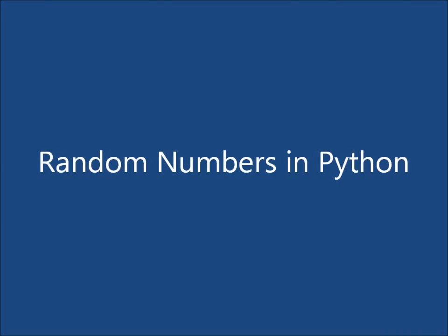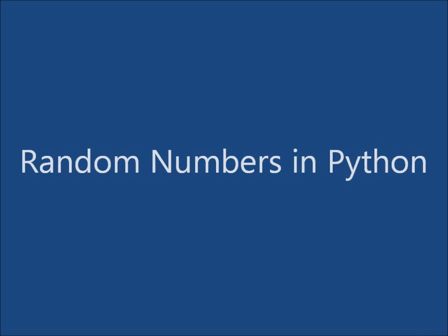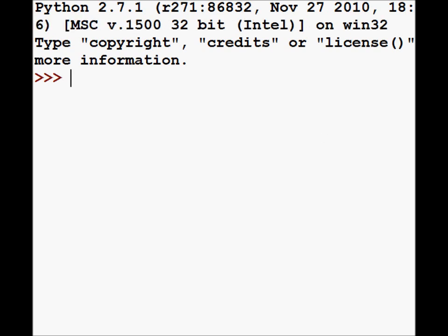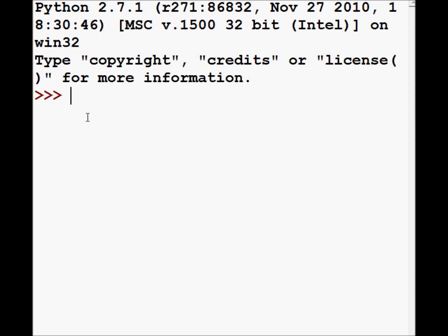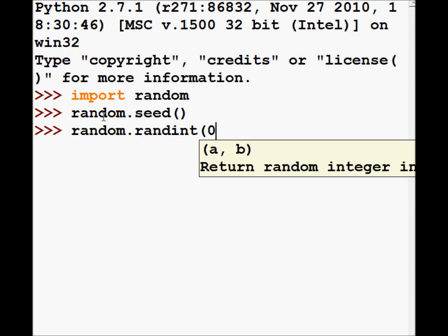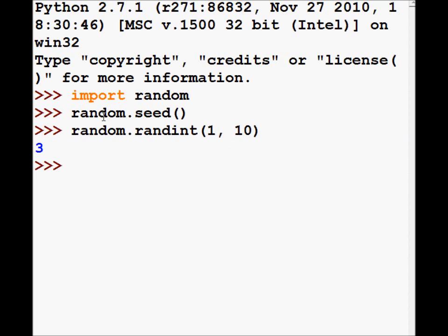Now, you will need to do random number generation in Python, so here is how you do it. You can import a random module, seed it, so there is a function that seeds the random number generator with the current system time. And then one of the useful methods in that module is randint that returns an integer in the interval a, b, so let's say 1 and 10, so here is a random 3, randint 1 10, so the second random number in that interval, and so forth.